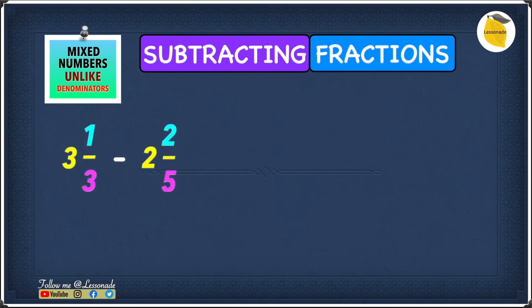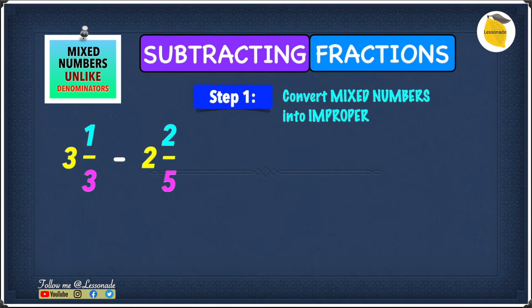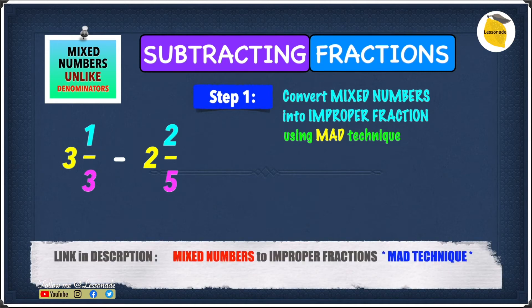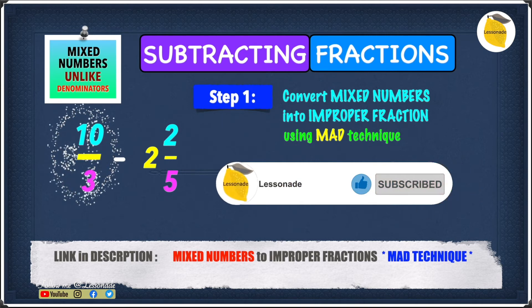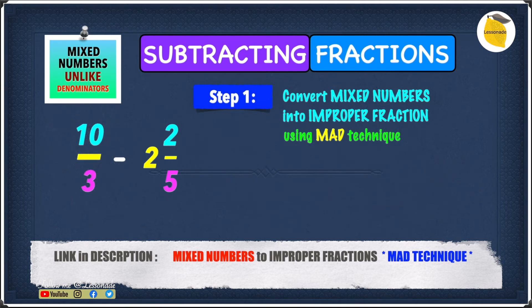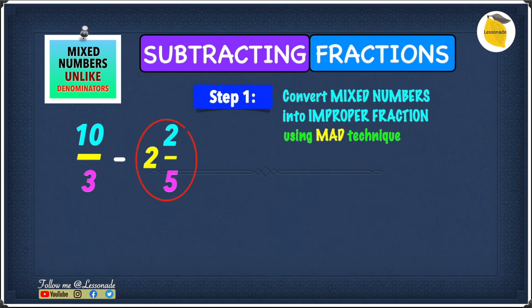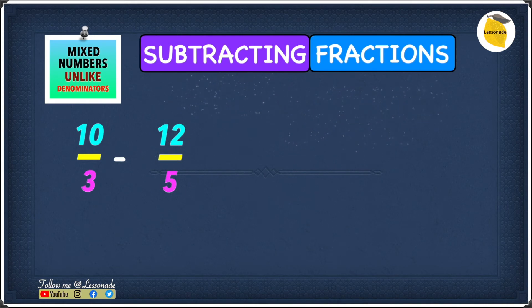Now let's see how to subtract mixed numbers with unlike denominators. The example we have is 3 1/3 minus 2 2/5. Step 1 is to convert mixed numbers into improper fractions using the MAD technique. Converting 3 1/3 gives us 10 over 3. Converting 2 2/5 gives us 12 over 5. So now we have 10 over 3 minus 12 over 5.